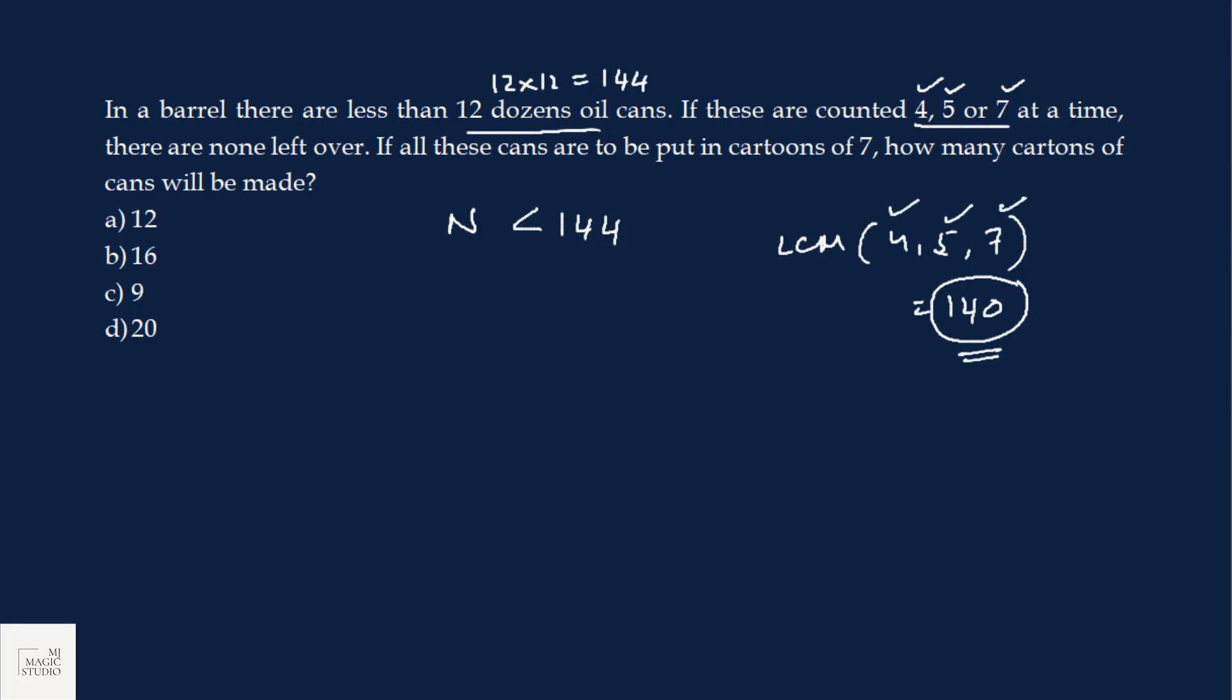So the number we are looking out for is 140. 140 is divisible by 4, 5, 7 all. If all these cans are to be put in cartons of 7, how many cartons of cans can be made? 140 by 7 is 20. We can have 20 cartons. Option D is the pick.